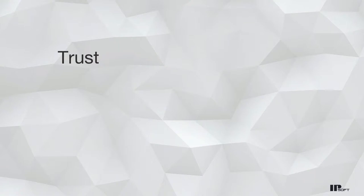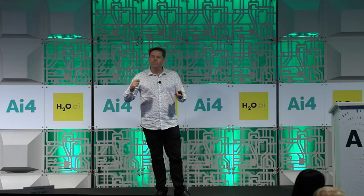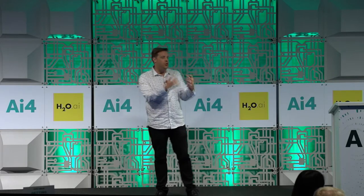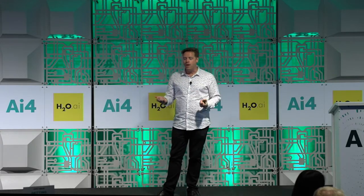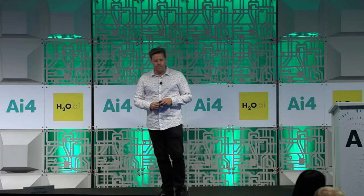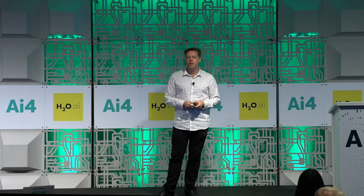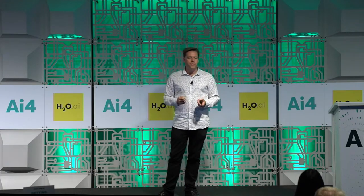Another critical component is trust — how people engage with technology. There's a 1997 paper by Parasuraman and others, who is a rock star in trust and automation circles. They describe four modes of how human beings interact with automation: use — you turn it on and off as appropriate; misuse — you trust it too much to do things it shouldn't; disuse — you just don't use it at all; and abuse — the creators of the system were not human-centered. I can't give you the right formula for building trust because it's highly dependent on the circumstance, but certain things will lose trust and others will gain it over time.